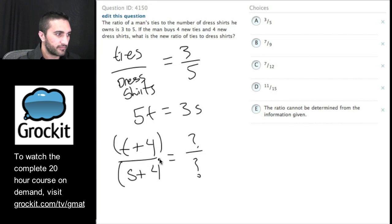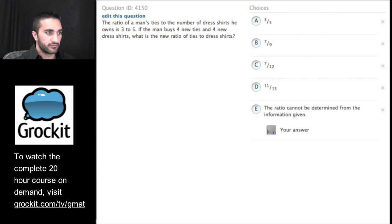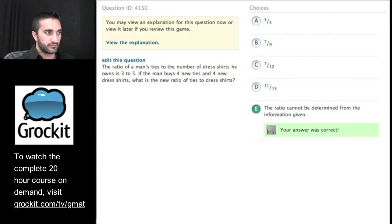Can we plug in? We're not really sure where we're starting. We don't know the actual number of ties and dress shirts. We know their ratio. But depending on where those actual numbers are, adding 4 more to each value could do a lot to the ratio. So we don't really have enough information to answer this question. That's correct.